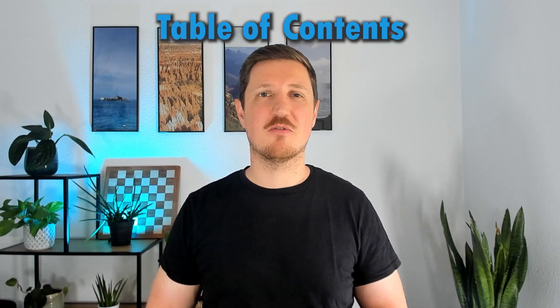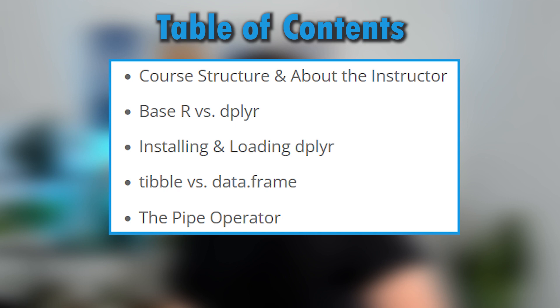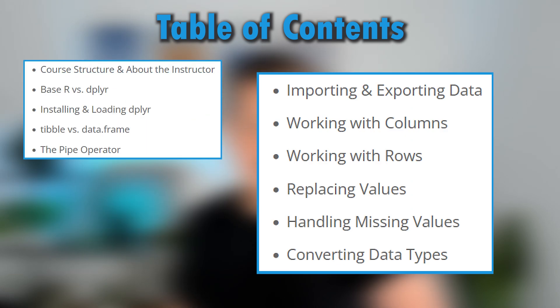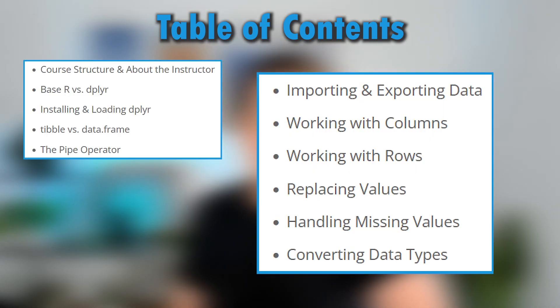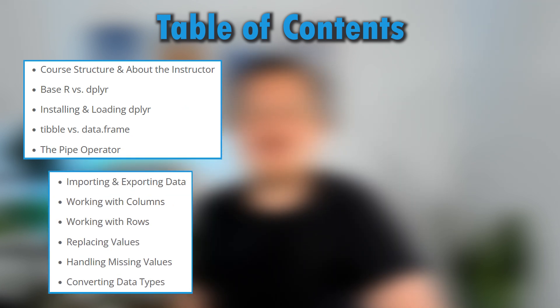Here are a few more details about the content of the course. We start by setting up the dplyr basics: what advantages and disadvantages does dplyr have compared to base R, and how do I use the pipe operator? Next we'll work on common data manipulation tasks: how to import and export data, how to add, remove, reorder, sample, and rename columns and rows, how to replace values in a data set, how to handle missing values, and how to deal with different types of data.